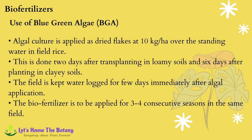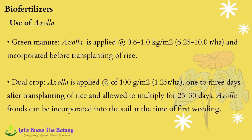For Azolla, green manure is applied at 0.6 to 1 kg per square meter (6.25 to 10 tons per hectare) and incorporated before transplanting of rice. Azolla is also applied at 100 grams per square meter (1.25 tons per hectare) one to three days after transplanting of rice and allowed to multiply for 25 to 30 days. Azolla fronds can be incorporated into the soil at the time of first weeding.